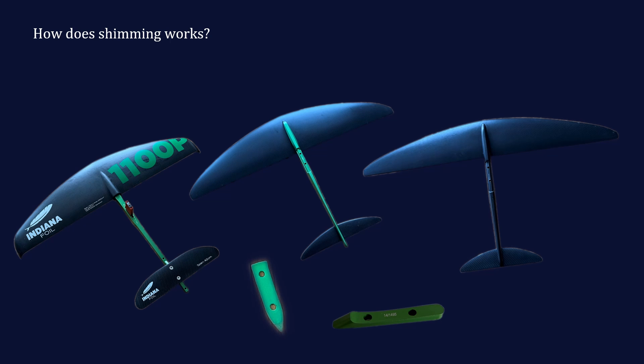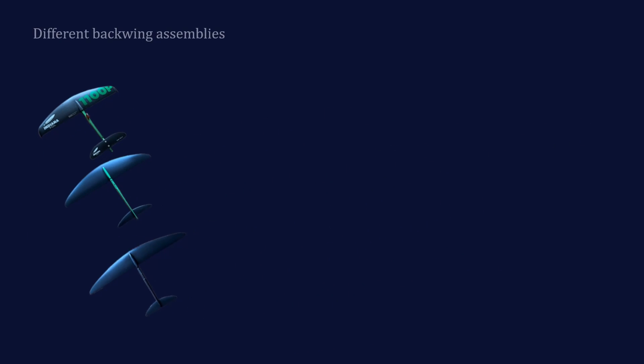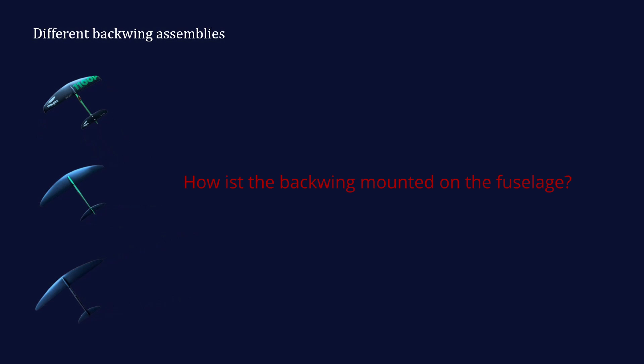Looking up shimming on the internet, you will sooner or later get confronted with the fact that there are different ways how foiling setups are assembled. Although they all look similar, there are some specifics. What is relevant for us in the context of shimming of the back wing is how the back wing is mounted on the fuselage.